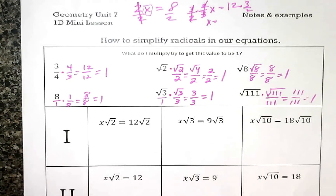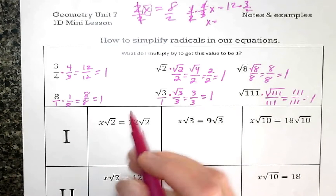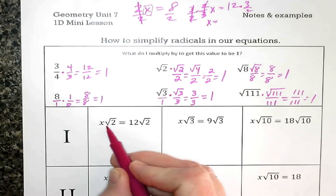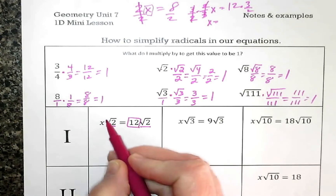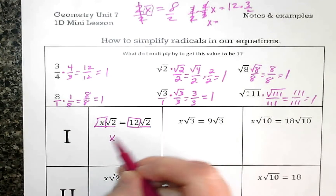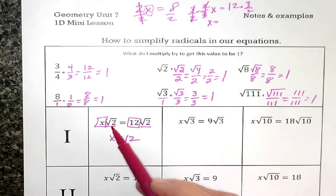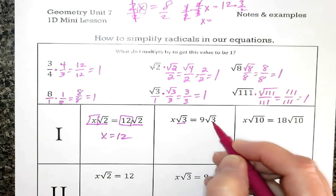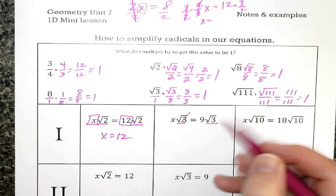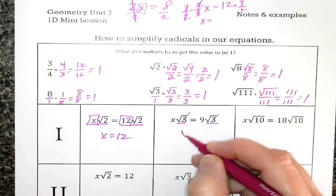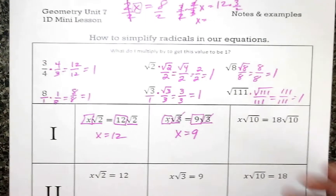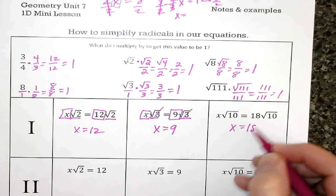The first scenario is the easiest — we don't even need all of that review. If I have a number times square root of 2 equals 12 times square root of 2, both sides have a square root of 2, so those cancel and x equals 12. Same thing with square root of 3 on both sides — they cancel, and x equals 18.